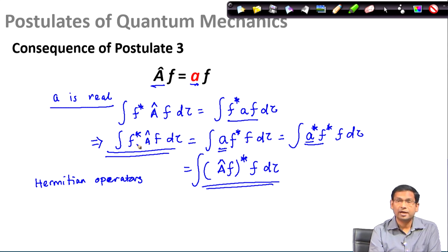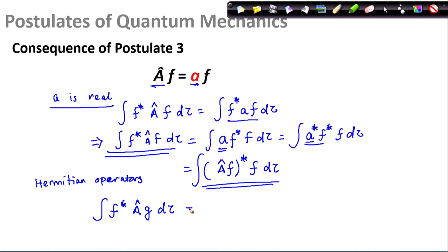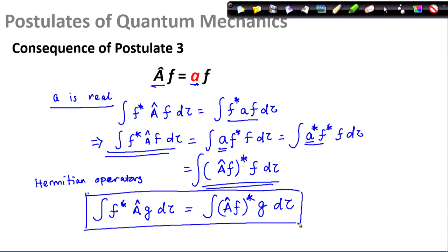This leads to the important property that the left-hand side integral equals the right-hand side integral after substituting A-star equals A. Linear operators that satisfy this equality — where the integral of f-star times A-hat acting on f equals the integral of (A-hat acting on f-star) times f — are called Hermitian operators. We can provide a more generic definition by taking two functions f and g: when an operator satisfies this relation for any well-behaved functions f and g, we call it a Hermitian operator. Most quantum mechanical operators we will deal with are Hermitian operators, and this is what we will discuss in our next few classes. Thank you for your attention.